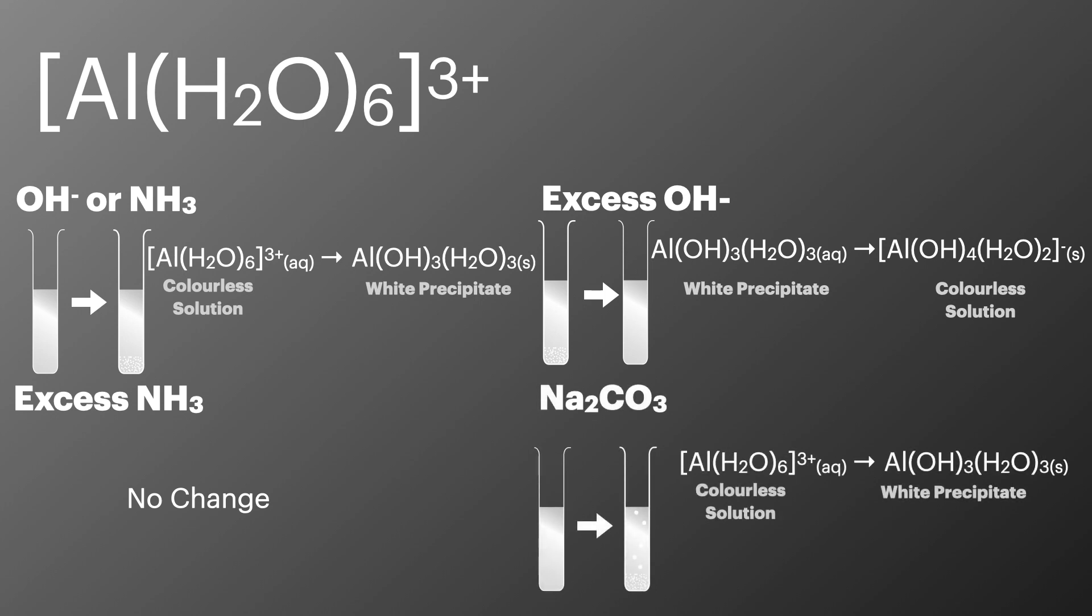And if we add it to sodium carbonate we do see a slightly different reaction to the other two we've already looked at. Because aluminium is a three plus metal ion we have a stronger acid. This means that it reacts with the carbonate as an acid releasing carbon dioxide, forming water and forming an aluminium hydroxide precipitate.